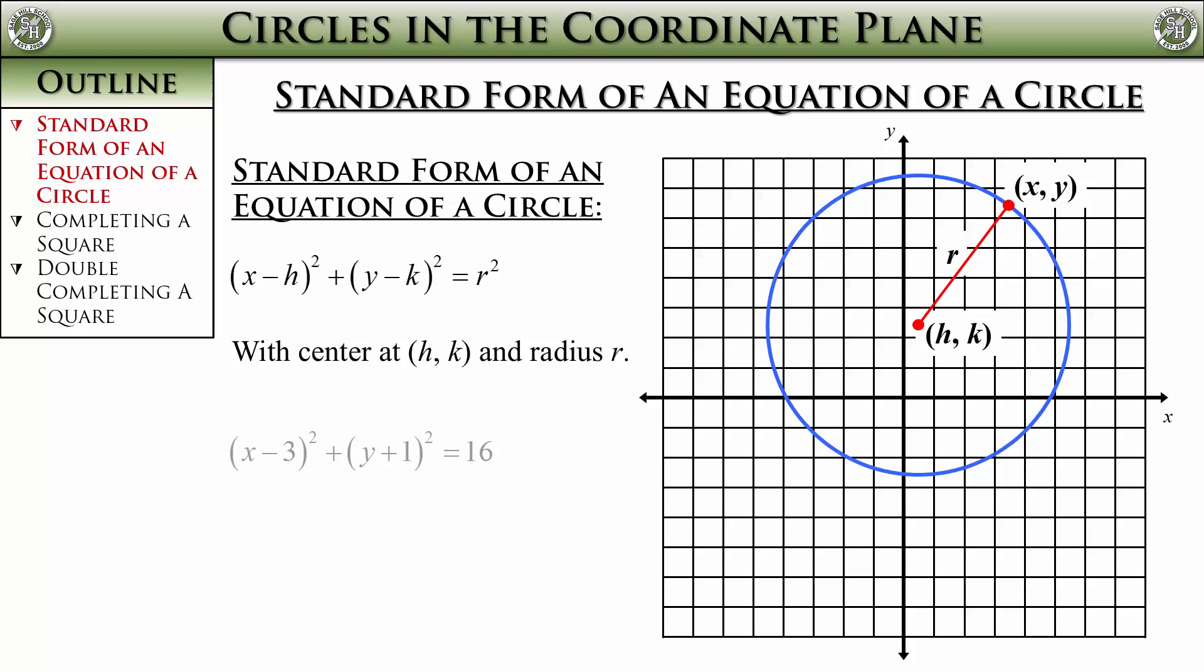Thus if you have this equation, since the equation already has negative symbols in it, since this equation says x minus 3 and y plus 1, the center is actually at positive 3 and negative 1. Make sure you flip the signs when you are going from equation to coordinate of the center, or vice versa.